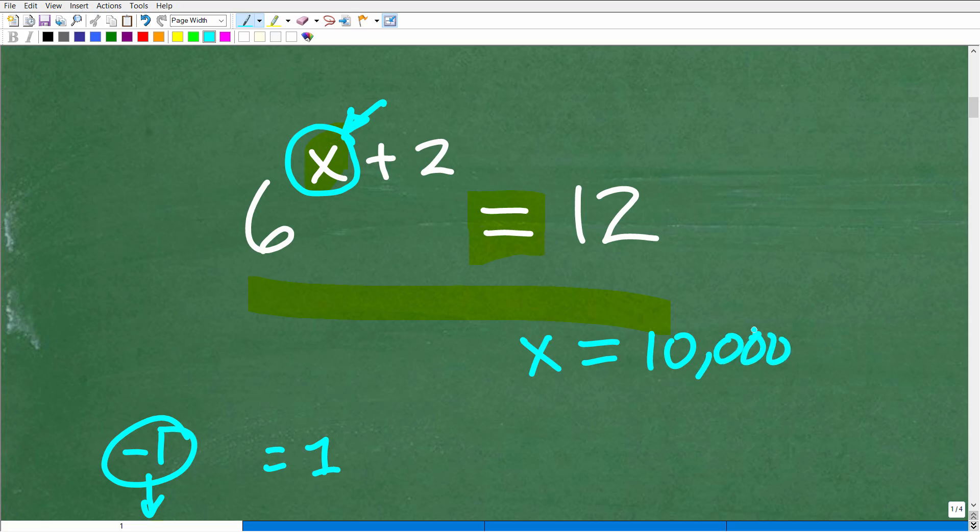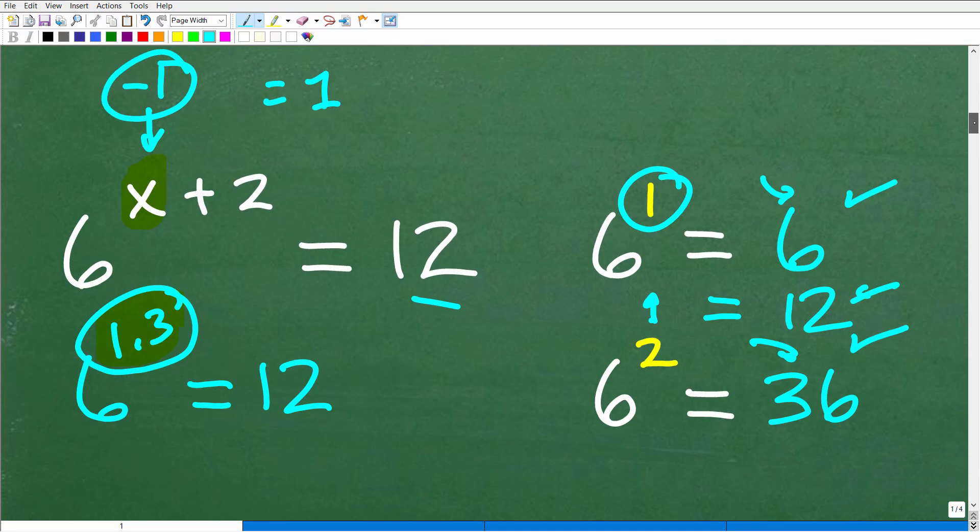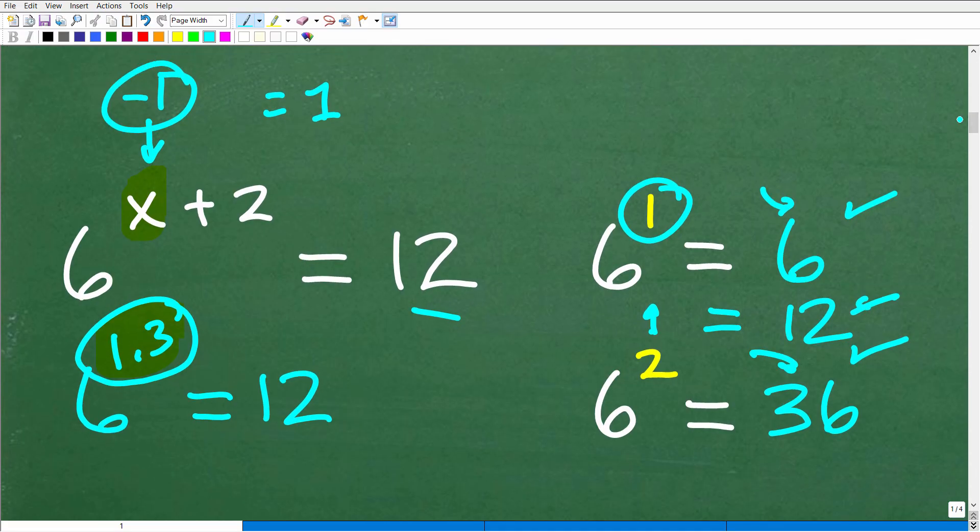...okay? Because if you come up with some sort of crazy answer like x is equal to 10,000, you should just use some common sense. That's impossible, right? So it's always a good idea, if possible, to scan the equation and try to estimate it.